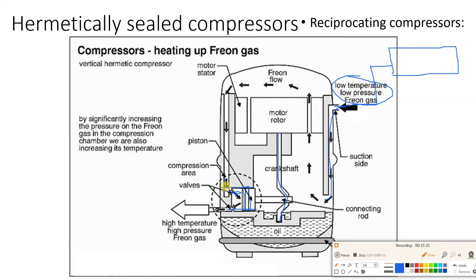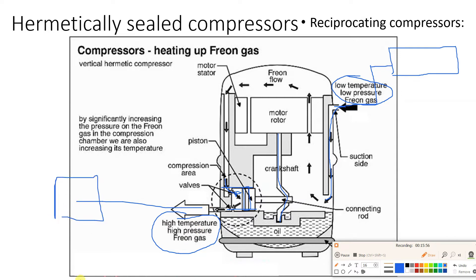During compression: suction is closed, discharge is closed, then whatever refrigerant is trapped inside is compressed between the cylinder valve and the piston. Finally, when the pressure is sufficient, the discharge valve opens and high pressure, high temperature refrigerant gas is discharged. This gas then goes to the condenser. So the refrigerant cools the oil, keeps the motor cool, and also keeps the compressor temperature maintained.